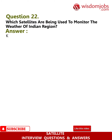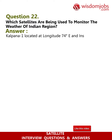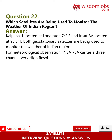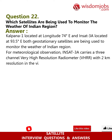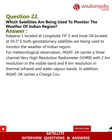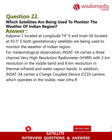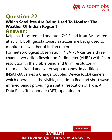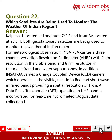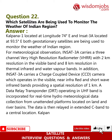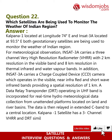Question 22: Which satellites are being used to monitor the weather of the Indian region? INSAT-1 is located at longitude 74 degrees East and INSAT-3 is located at 93.5 degrees East. Both geostationary satellites are used to monitor the weather of the Indian region. INSAT-3 carries a three-channel Very High Resolution Radiometer (VHRR) with 2 km resolution in the visible band and 8 km resolution in thermal infrared and water vapor bands. It also carries a CCD camera operating in visible, near-infrared, and short-wave infrared bands providing 1 km spatial resolution, and a Data Relay Transponder (DRT) in UHF band for real-time hydro-meteorological data collection. INSAT-1 has a three-channel VHRR and DRT similar to INSAT-3.